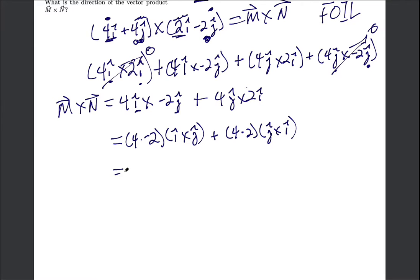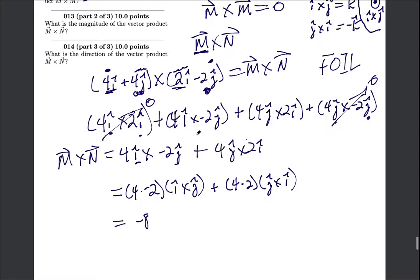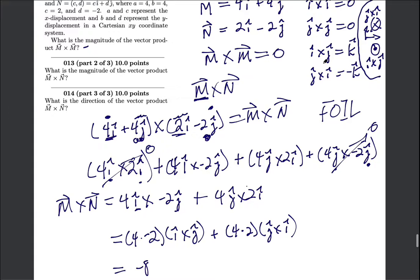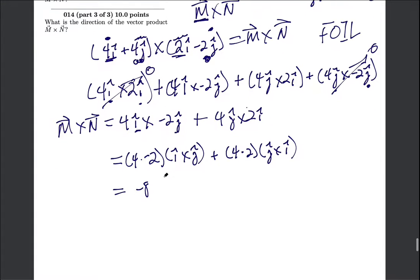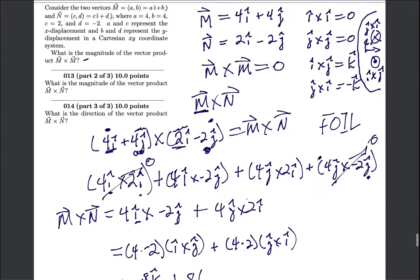Okay, so up here that gives us negative 8, and then i cross j, I'm going to scroll up a little bit, i cross j is k, that's out of the page, so that's negative 8 but then there's a k-hat. Okay, and then plus, this is 8 again.